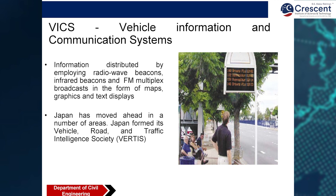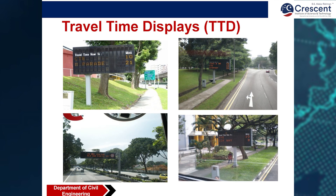The Vehicle Information and Communication System provides information to passengers standing at bus stops regarding various vehicles. It communicates using radio wave beacons, infrared beacons, and FM multiplex broadcasts in the form of maps, graphics, and text displays. Travel time display uses sensors to detect your vehicle's speed and displays how much time is required to reach the nearest station.